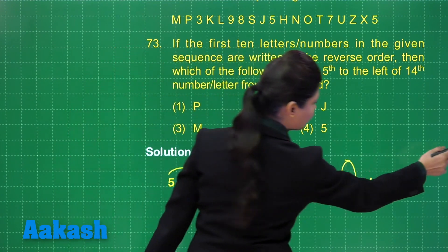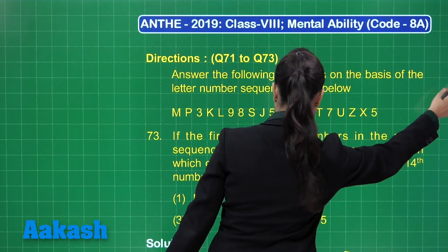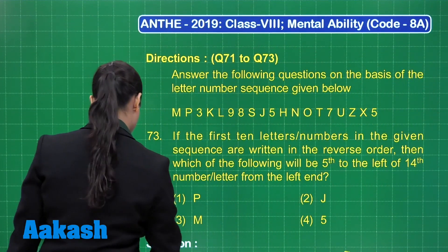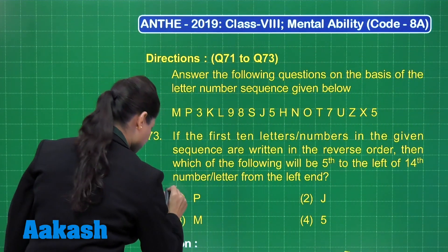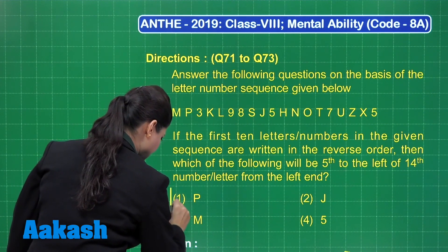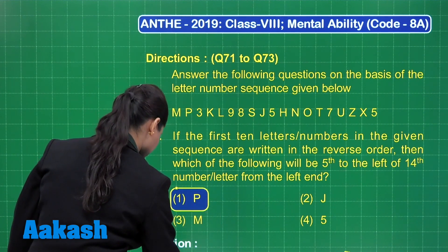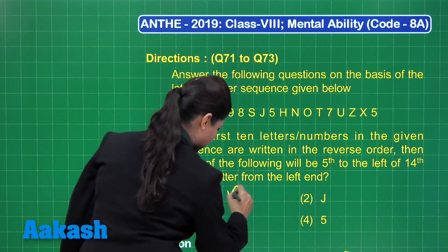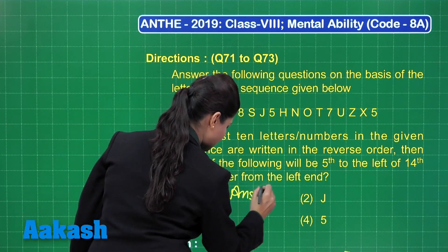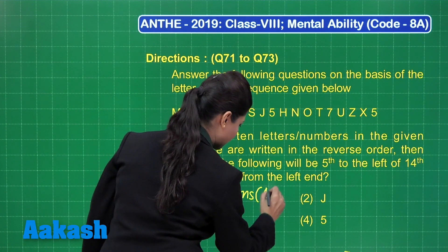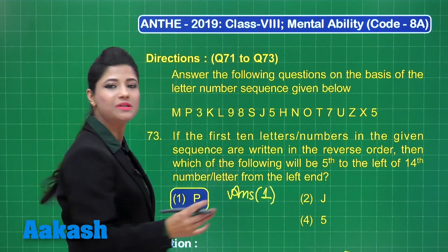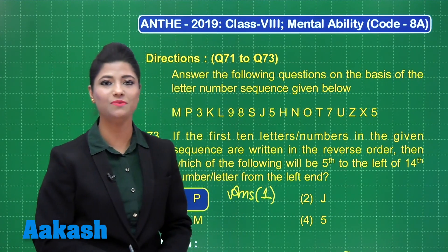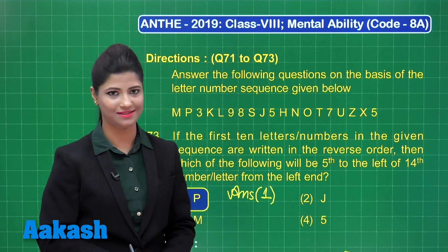So the correct answer for question 73 is P. You can mark your answer as option number one. I hope this question is clear to you. Let's proceed ahead with the next question.